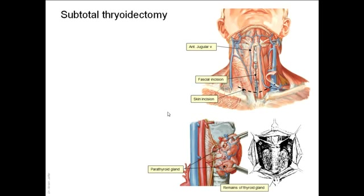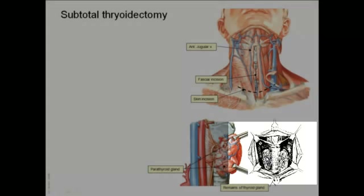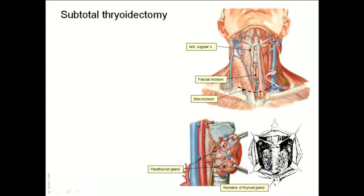In case of subtotal thyroidectomy, most of the thyroid gland is removed. Only the posterior part of the thyroid gland is kept in position.